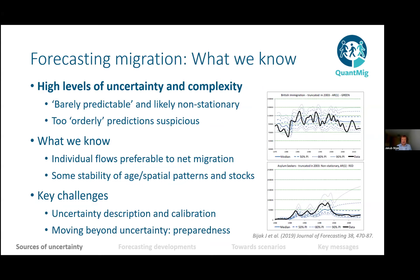We do know some things about regularities in migration — age patterns and spatial patterns exhibit regularities we can rely on. Migrant stocks change more slowly than flows and are less volatile. We can disaggregate flows into subgroups with similar characteristics, which is preferable to modeling aggregates like net migration. The key challenges remain: describing and calibrating uncertainty properly, and knowing what to do with it in applied work when communicating with policymakers.